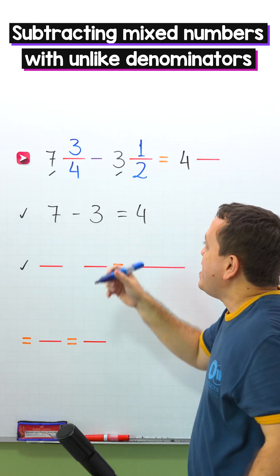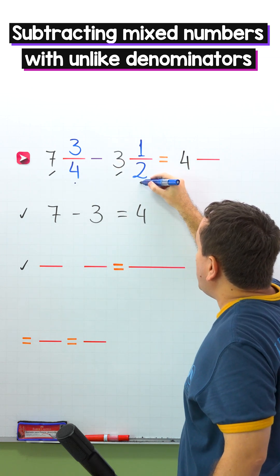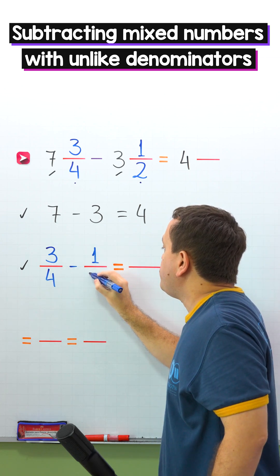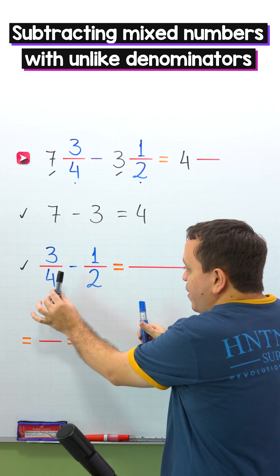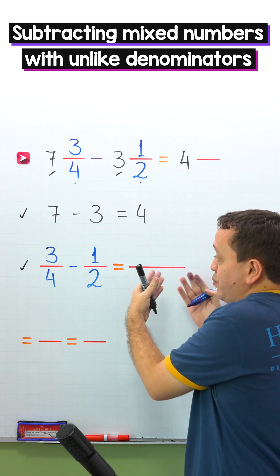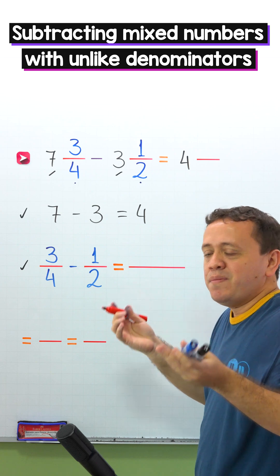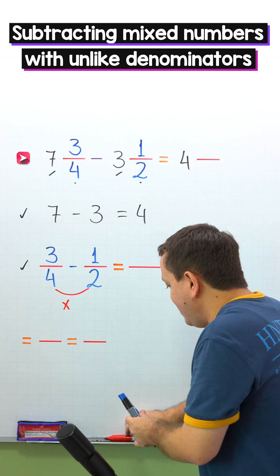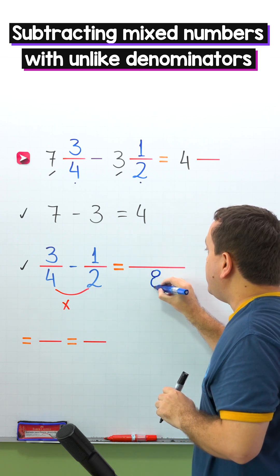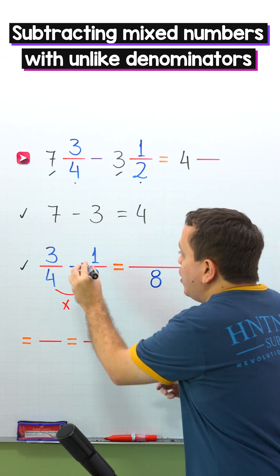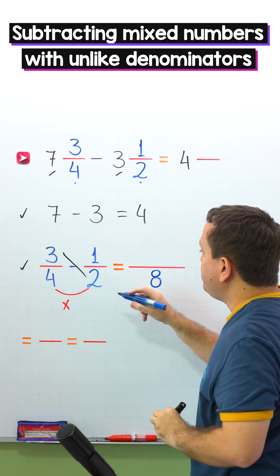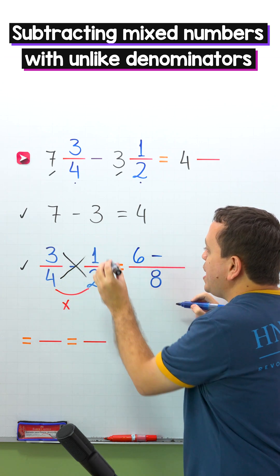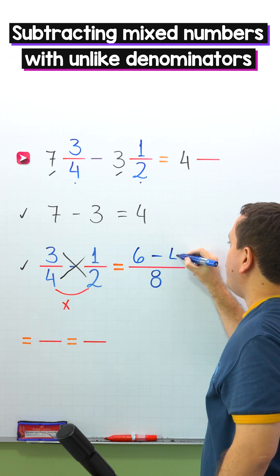It's time to subtract the fractions. The fractions are 3 fourths and 1 half. In the same order, we put 3 fourths minus 1 half. These fractions have different denominators — we have 4 on the left and 2 on the right. To find the difference, we can use the butterfly method one more time. We start by multiplying the denominators: 4 times 2 gives us 8. Then we cross multiply. On this side, we have 3 times 2, and 3 times 2 is 6. Then the minus sign. On the other side, we have 4 times 1, and 4 times 1 is 4.